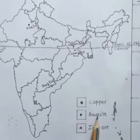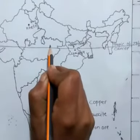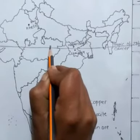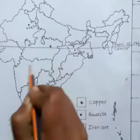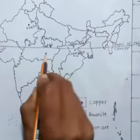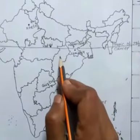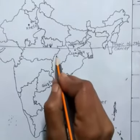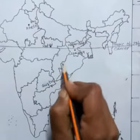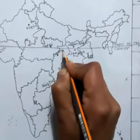Now we mark bauxite mines. Bauxite mine is in Kattani, which is in Madhya Pradesh. We are representing bauxite with a small square box. Next is Amarkantak, which is in Chhattisgarh.